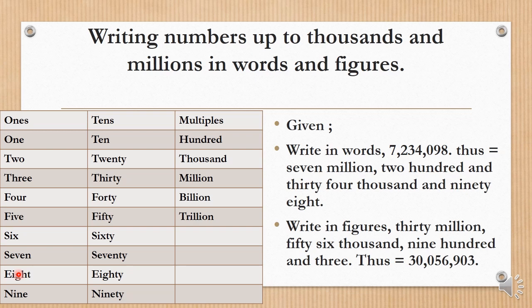You're given, 'Write in figures: thirty million, fifty six thousand, nine hundred and three.' I repeat, thirty million, fifty six thousand, nine hundred and three. Now what do you do? You can use your abacus, or if you don't want to use your abacus, you can use that table I used to teach you number tabular form to represent each digit by their value so that you will know where zero goes and where the other numbers go.